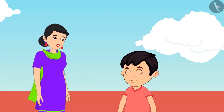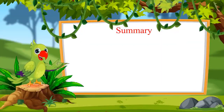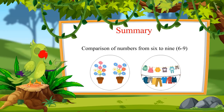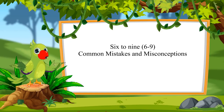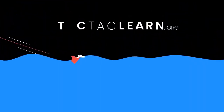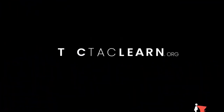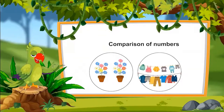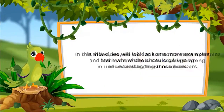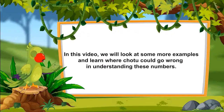So children, that was all for today. In this video, we saw some examples of numbers from 6 to 9 in which we compared these numbers. In the next video, we will see some more examples and learn about some common mistakes. Till then, goodbye friends. In the previous video, you compared numbers. In this video, we will look at more examples and learn where Chotu would go wrong in understanding these numbers.